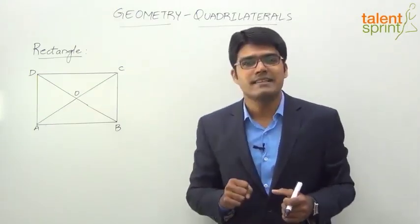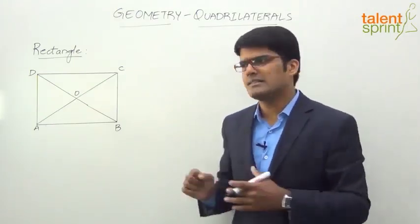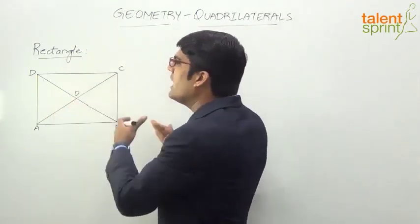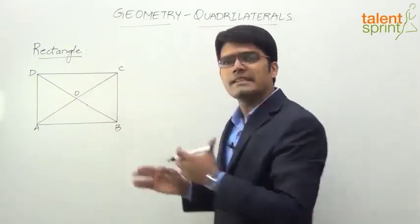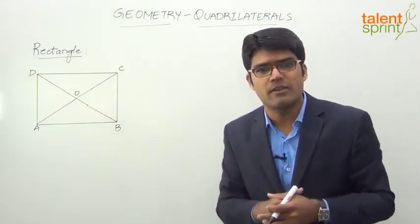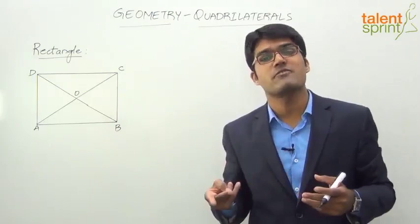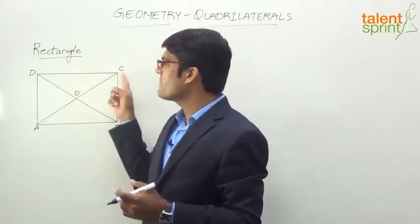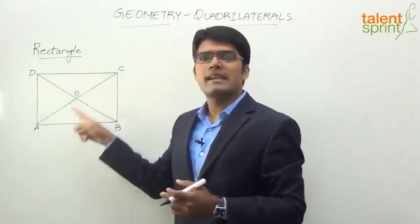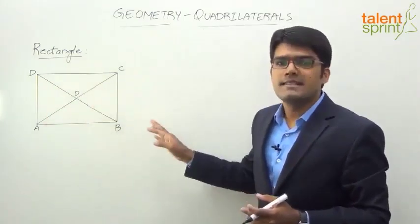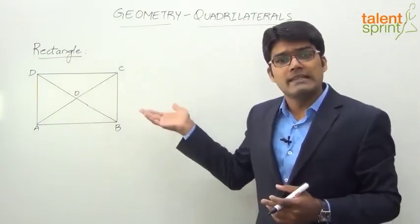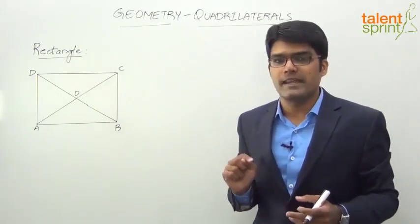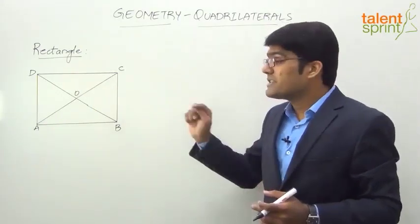Here, ABCD is a rectangle. Like a parallelogram, you can see that the opposite sides are parallel and the opposite sides are equal — that is the basic definition of a parallelogram. Here also we find that the opposite sides are parallel and equal. Hence a rectangle is a parallelogram, but a parallelogram is not necessarily a rectangle.